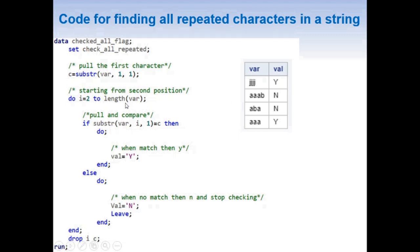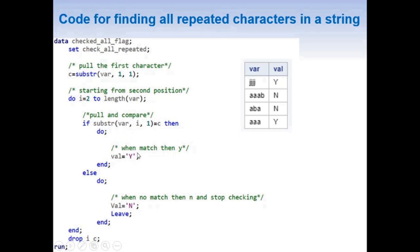For the first row, the DO loop starts at 2. Inside the loop we have an IF statement: IF SUBSTR(var, i, 1) = c. On the first iteration this becomes SUBSTR(var, 2, 1), extracting the character at the second position and comparing it to the first character stored in c. Since it matches, we assign a value of Y.